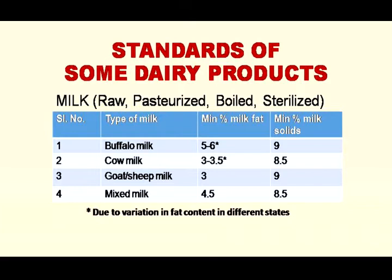States like Assam, Bihar, Delhi, Gujarat, and Maharashtra have higher fat content, so it is kept at 6%, and the rest of the states have a minimum fat content of 5%. For cow milk it varies from 3 to 3.5 and even 4%, and milk solids not fat is 8.5%. Odisha and Mizoram have 3% fat; Chandigarh, Haryana, and Punjab have 4%; the rest have 3.5%. Goat and sheep milk minimum fat is 3% and SNF 9%. Mixed milk is 4.5% milk fat and SNF 8.5%.